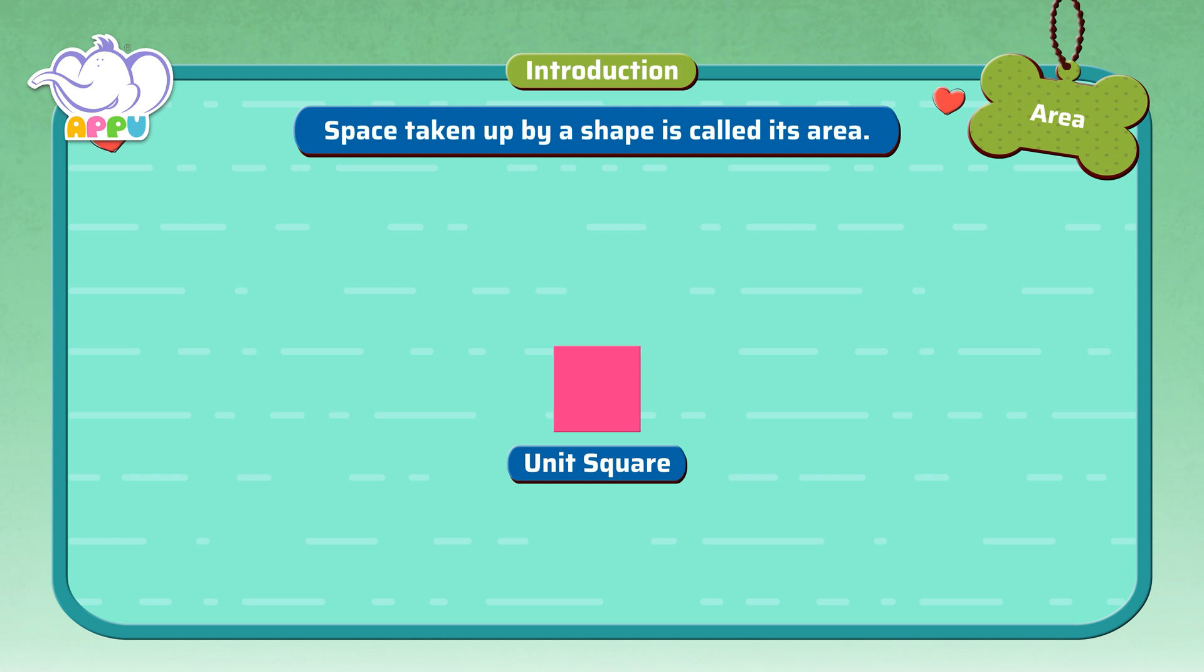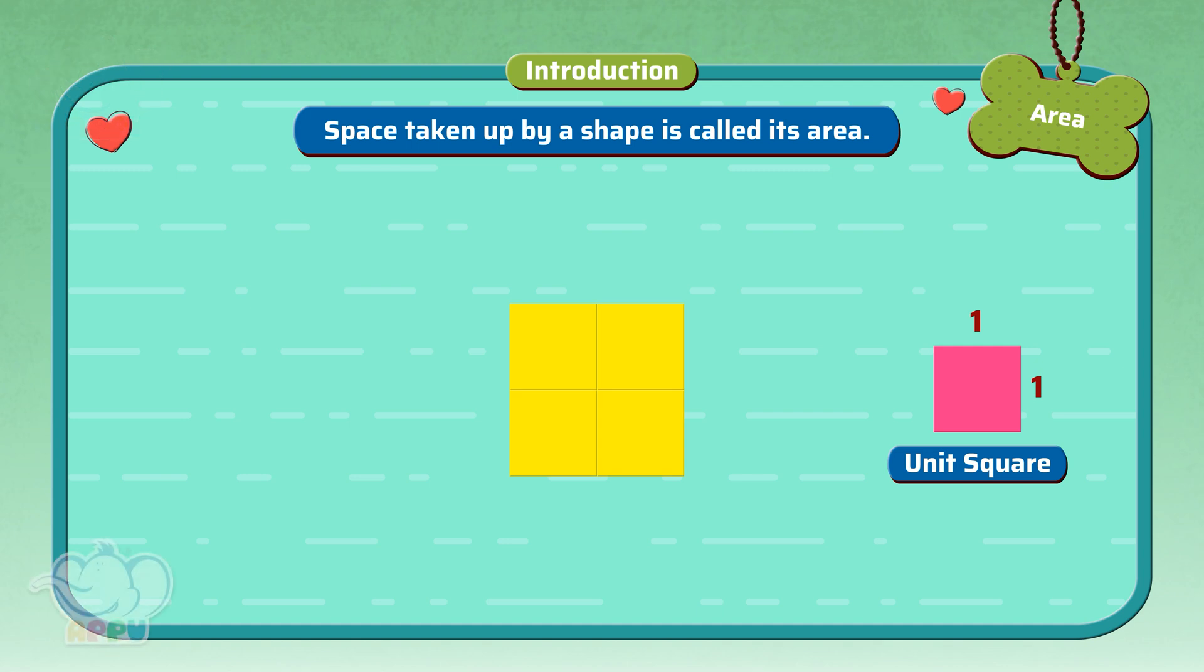A unit square is a square having one unit as side length. This is a square. Let's find its area.